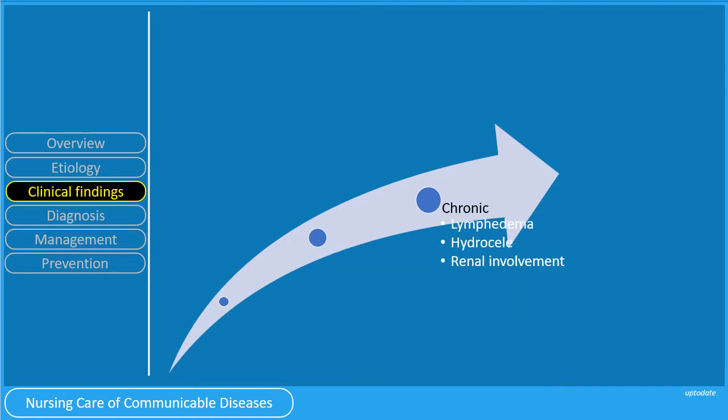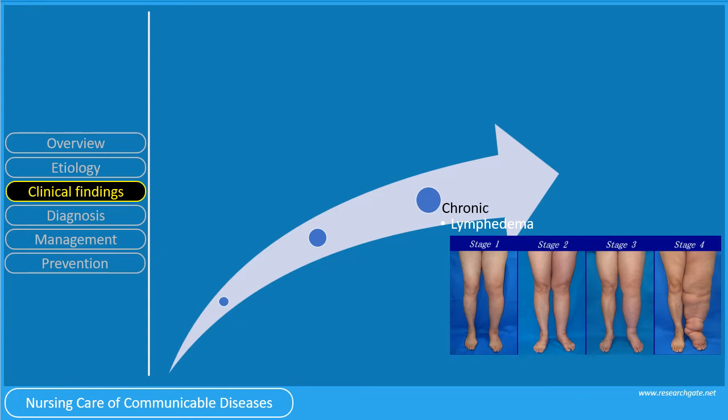Chronic filariasis manifests with lymphedema, hydrocele, and renal involvement. The swelling and decreased function of the lymph system make it difficult for the body to fight germs and infections, leading to more bacterial infections in the skin and lymph system. This causes hardening and thickening of the skin, called elephantiasis — the last stage of lymphedema, characterized by non-pitting edema with skin thickening and overgrowths. It is non-reversible.